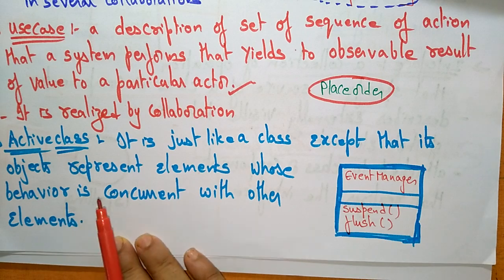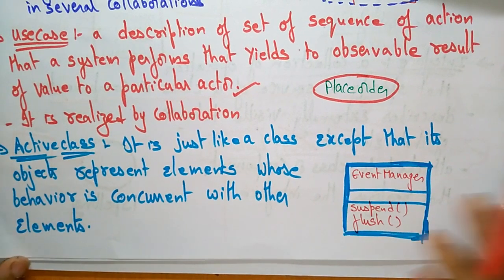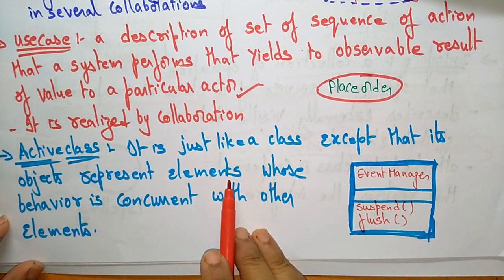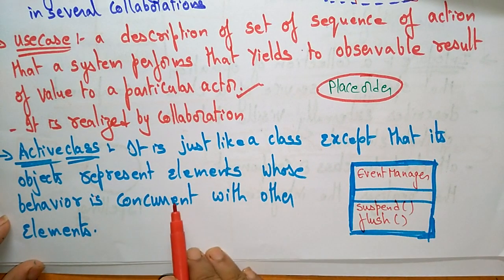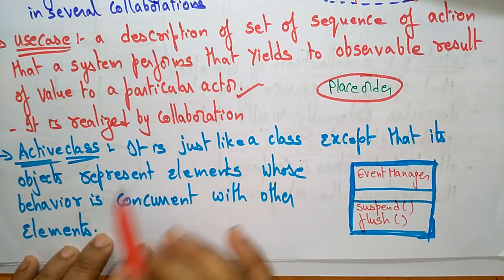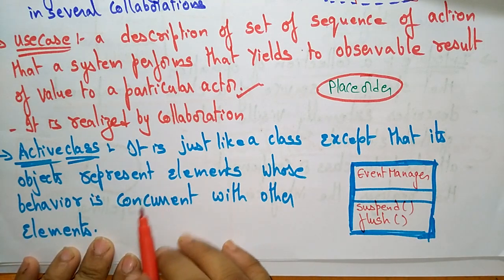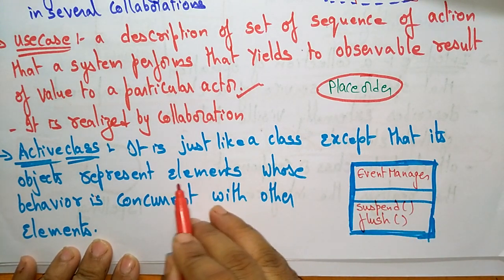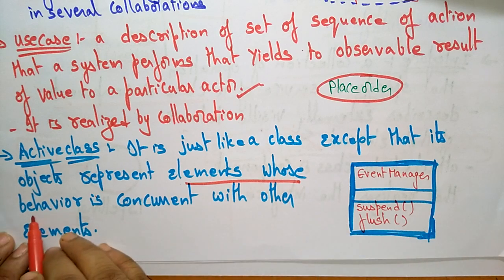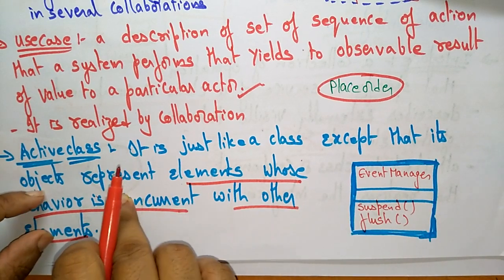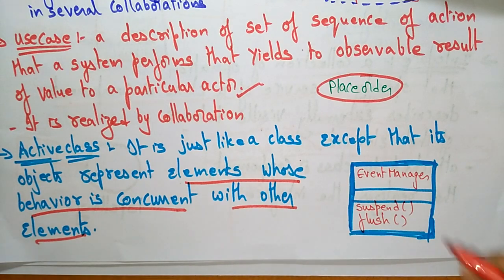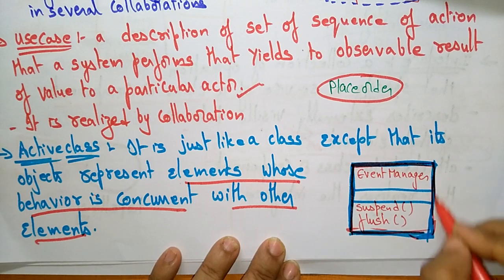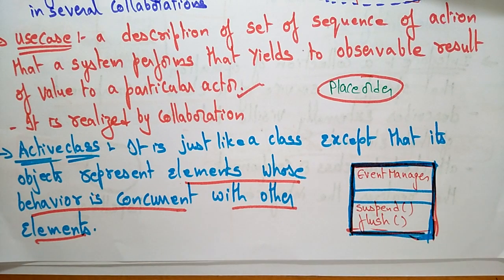The next structural thing is active class. An active class is just like a class except that its objects represent elements whose behavior is concurrent with other elements. The difference between a class and an active class is that the active class elements behave concurrently with other elements. The active class is represented with solid lines — a solid box.